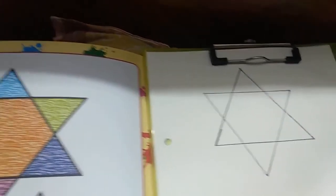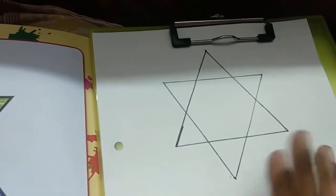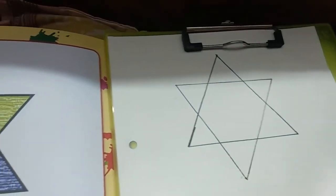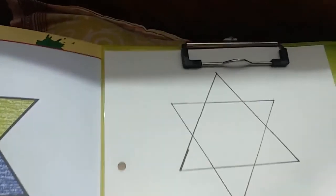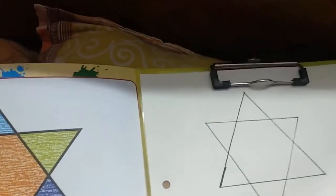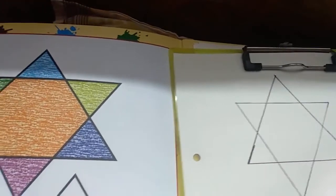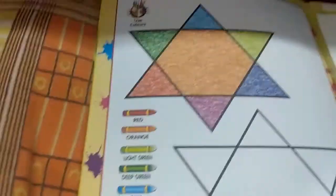That means this work we have to do in your drawing book in page number 2. Children, I am taking a paper to show you because I cannot do coloring in the drawing book. So children, you just see the video how to color. And before coloring, let me introduce you with some color names.